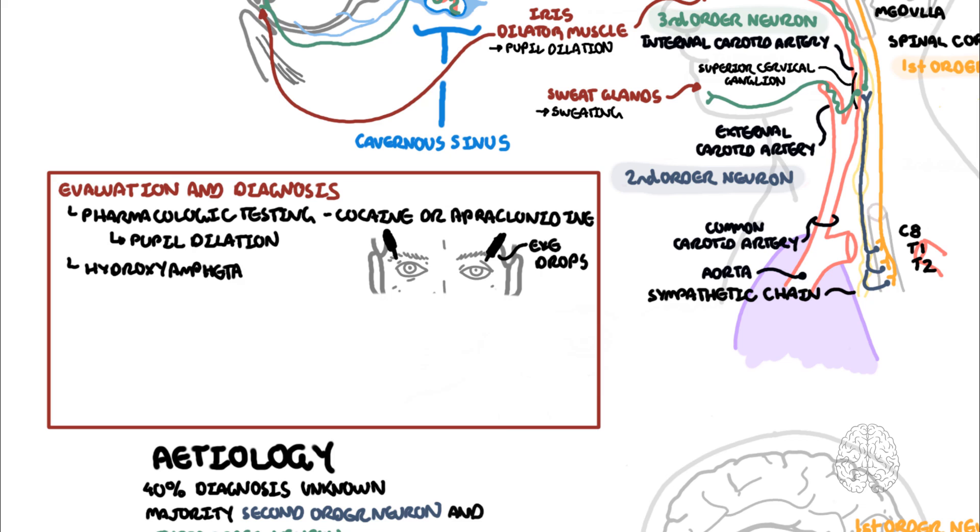Then you do the hydroxyamphetamine eye drop test, which helps identify localization of the lesion. It actually helps distinguish third-order neuron from first- or second-order neuron lesions only.